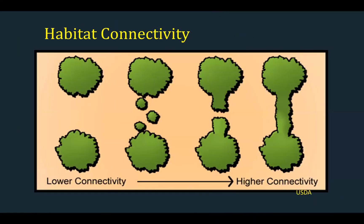What is habitat connectivity? It can be defined simply as the degree to which species are able to move across the landscape. So creatures need to move — but where and how and when? These are important questions for wildlife management and for conservation.